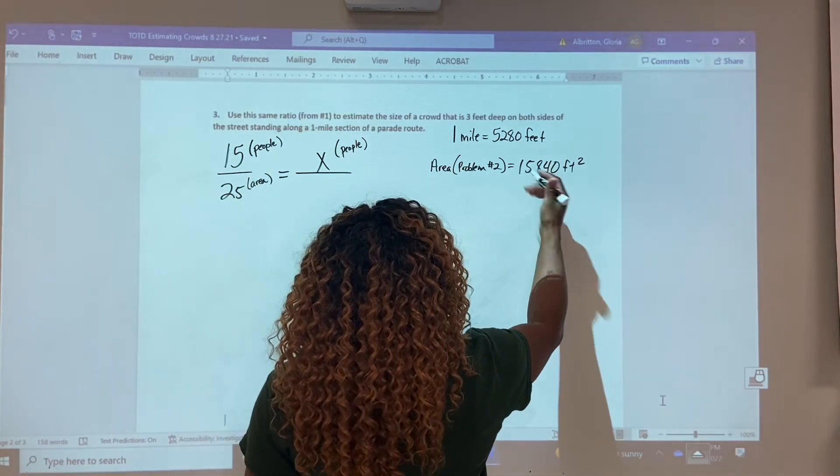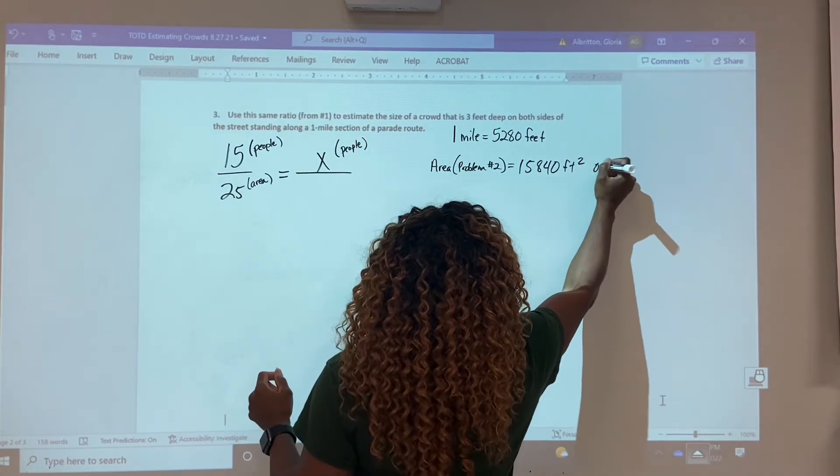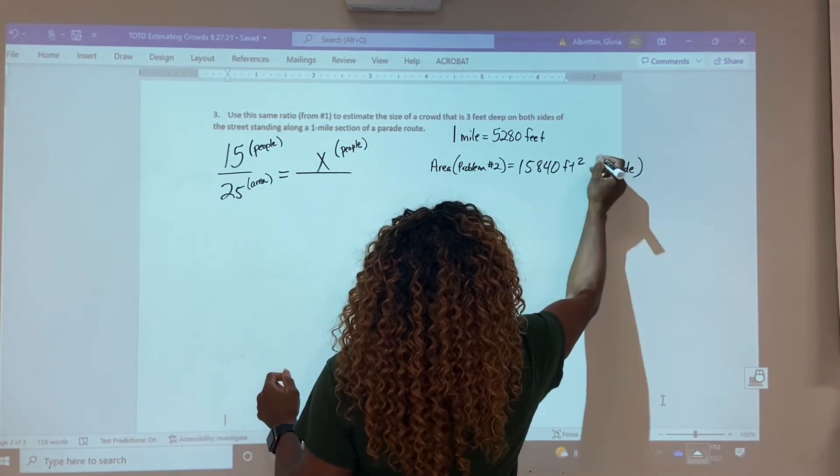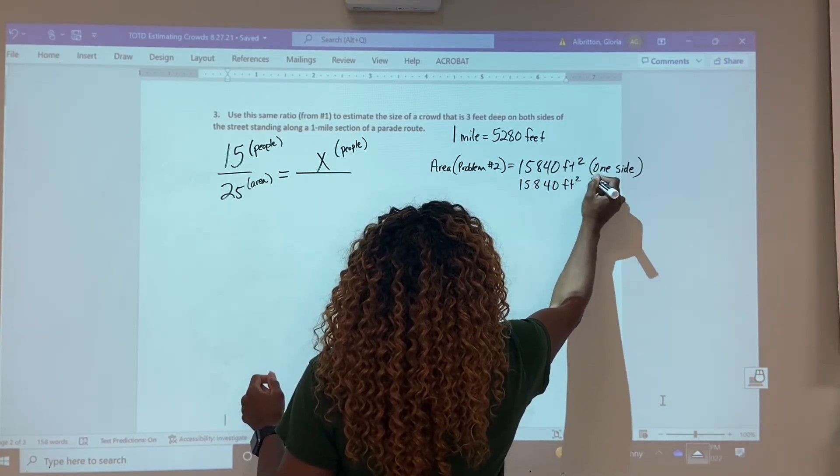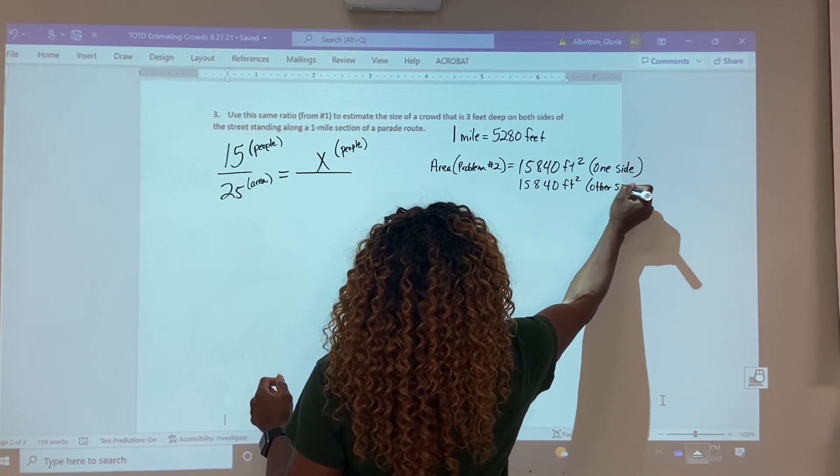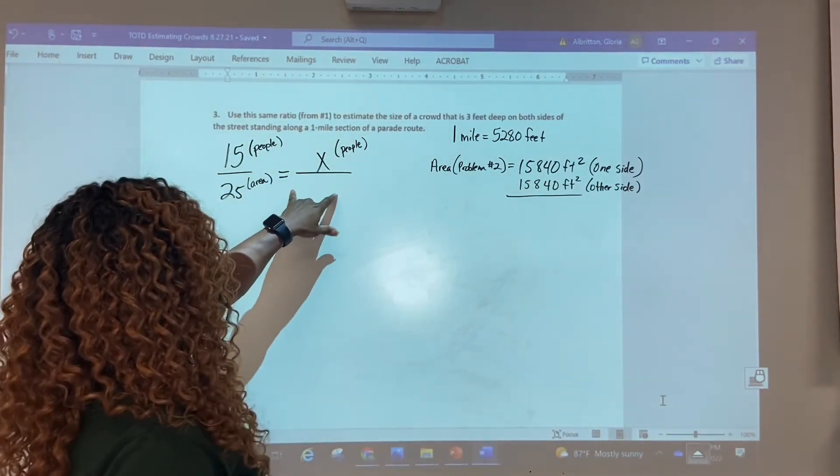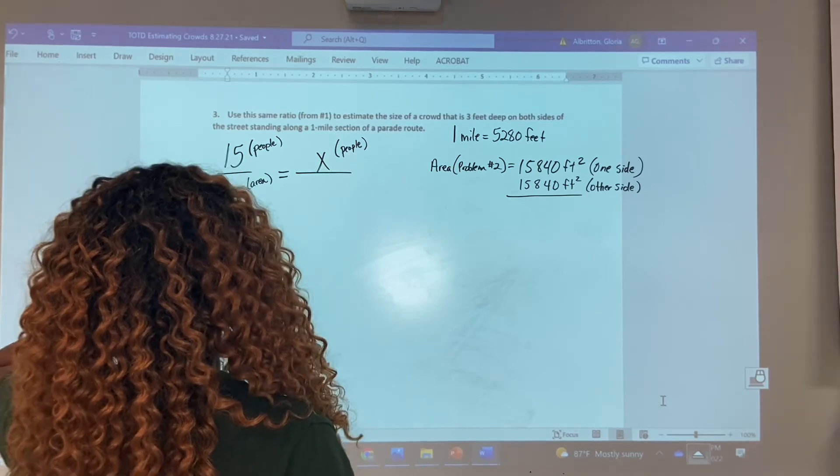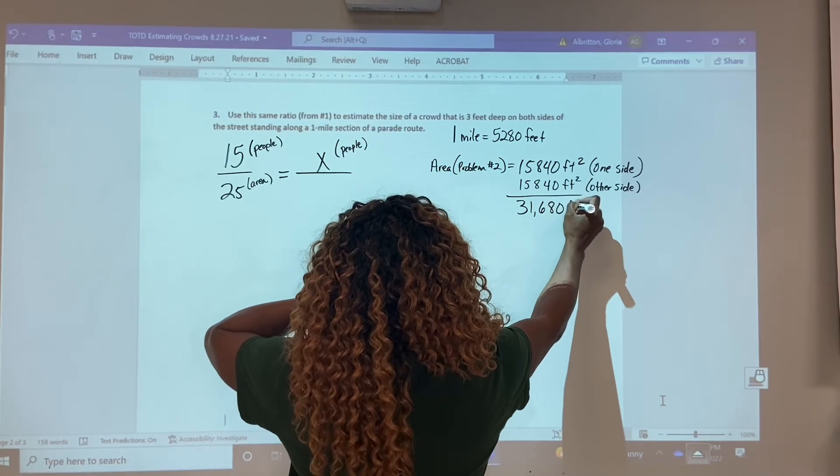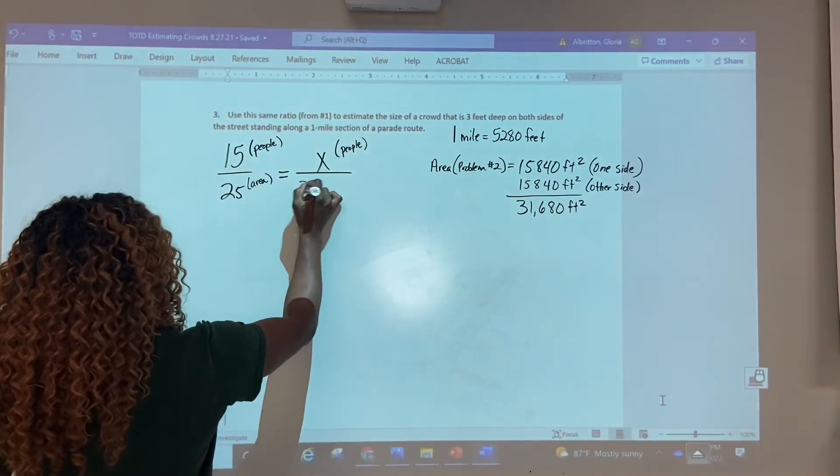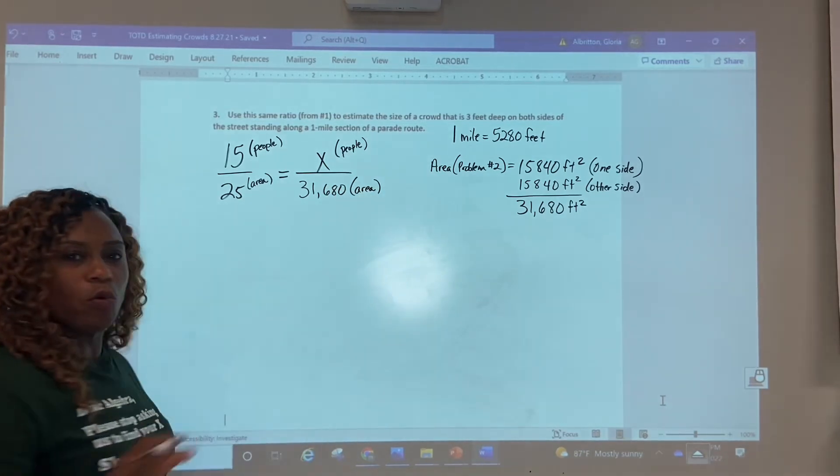So if I double this, another side, so I'm going to say this was the area for one side of the street. So the other side also has to be 15,840 square feet. So I'm going to put other side so we can keep up with what we're talking about. So this will give us a total area and that will be the value that goes here. So if we actually calculate that, we're going to end up with 31,680 square feet. So this is what goes here, and this is the area for both sides of the street.